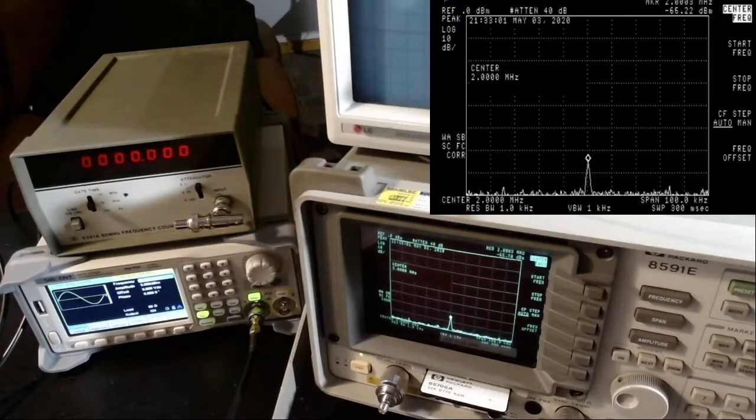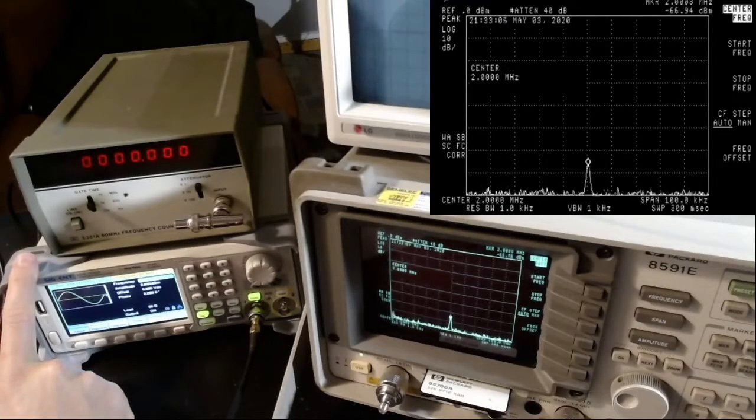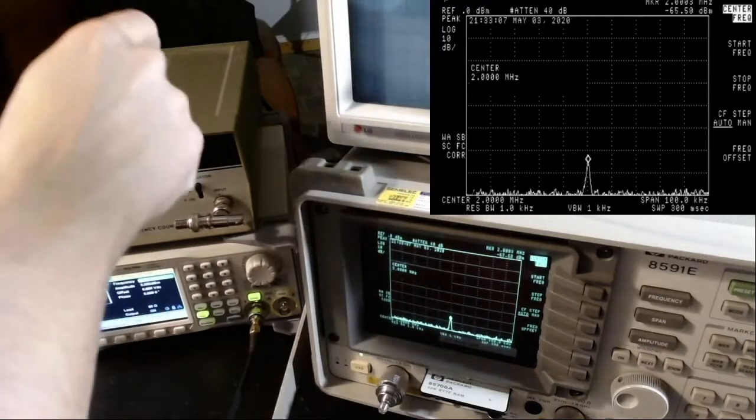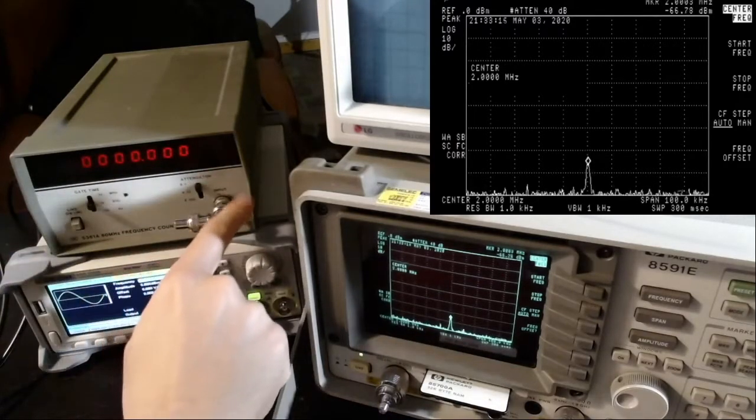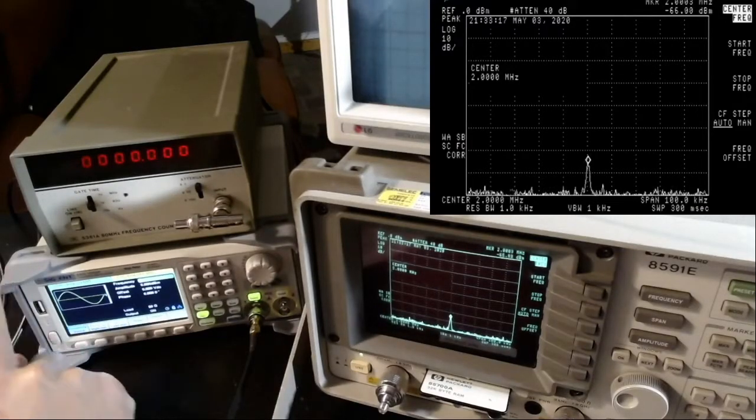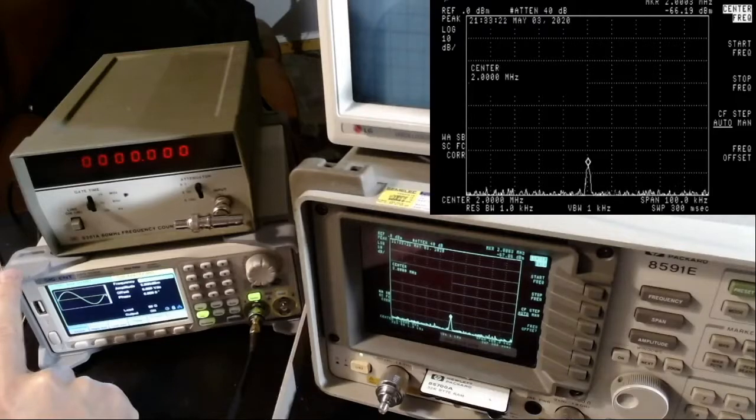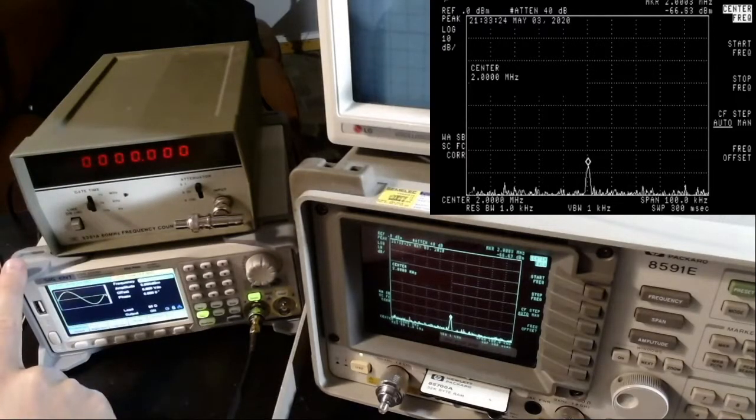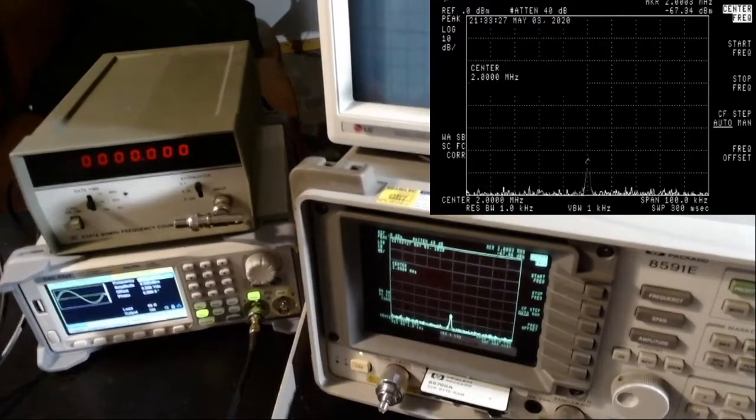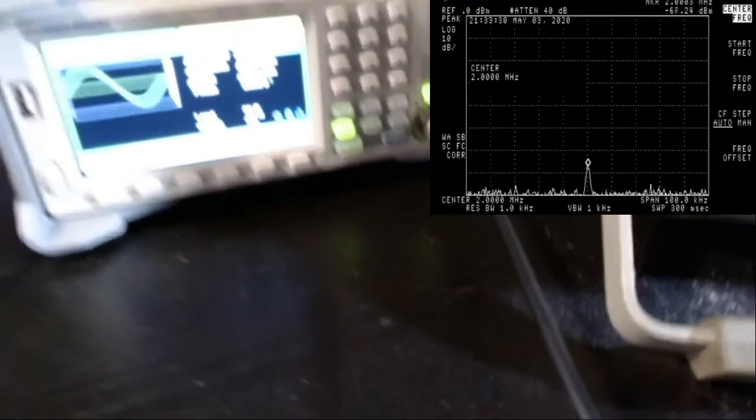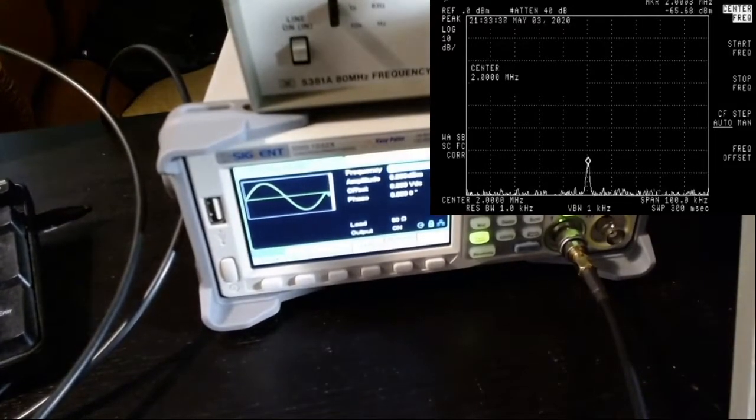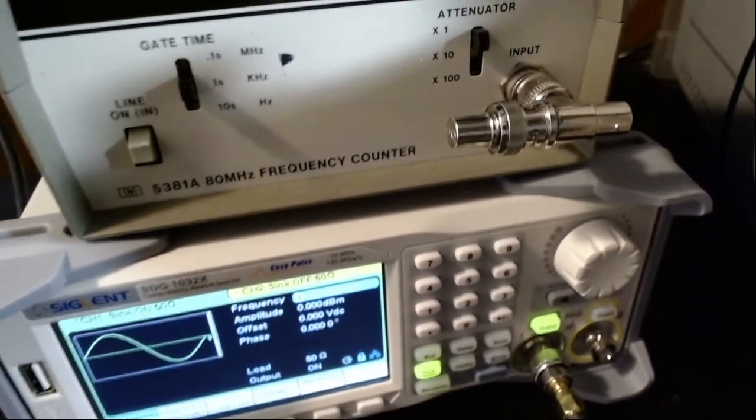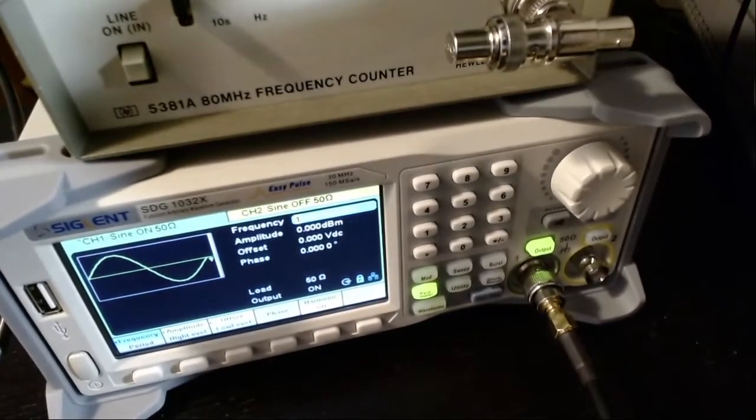I wanted to mention something more that I didn't mention last time. This is not just an arbitrary waveform generator; it also has a frequency counter on the back. That's why I put this old frequency counter here, which has a port at the front. This only has an input for the counter at the back, but this can reach only 80 megahertz while this can reach 200 megahertz. Let's see this in action.